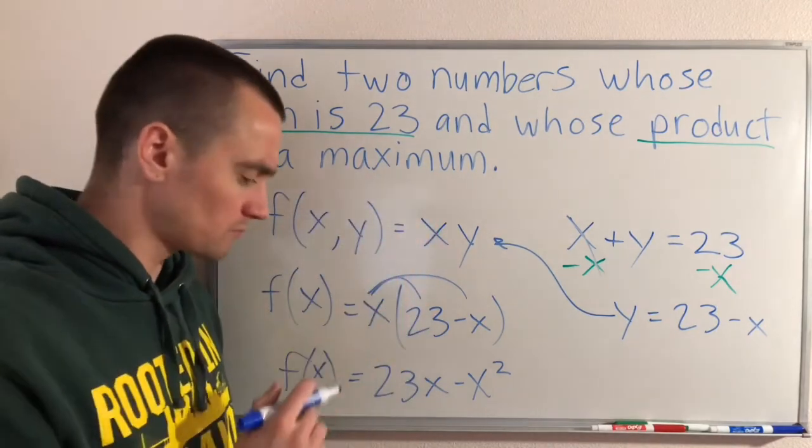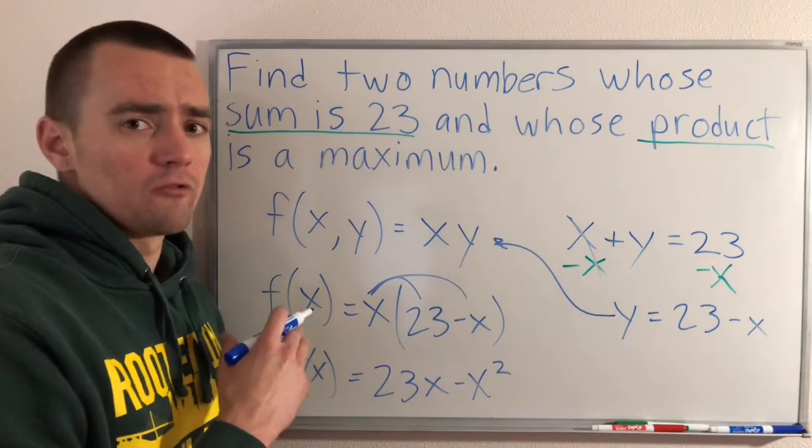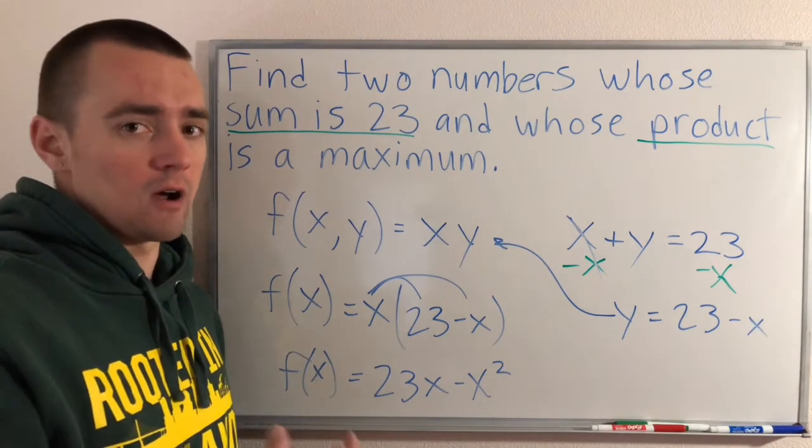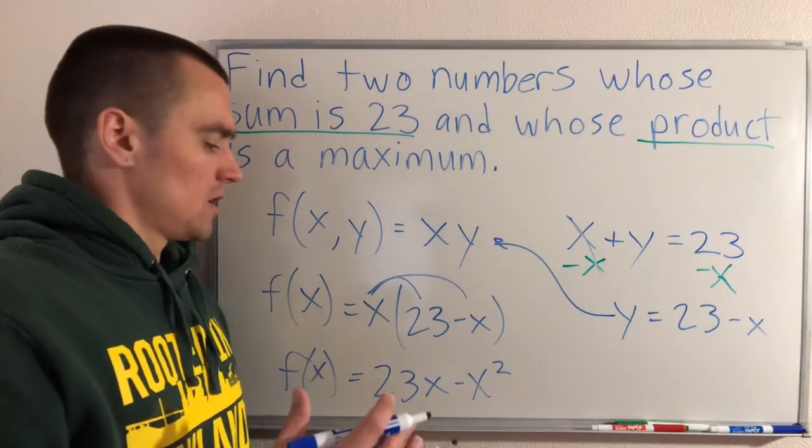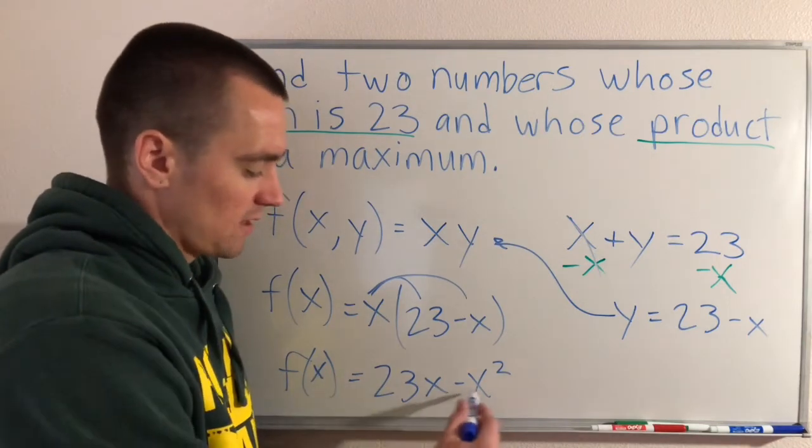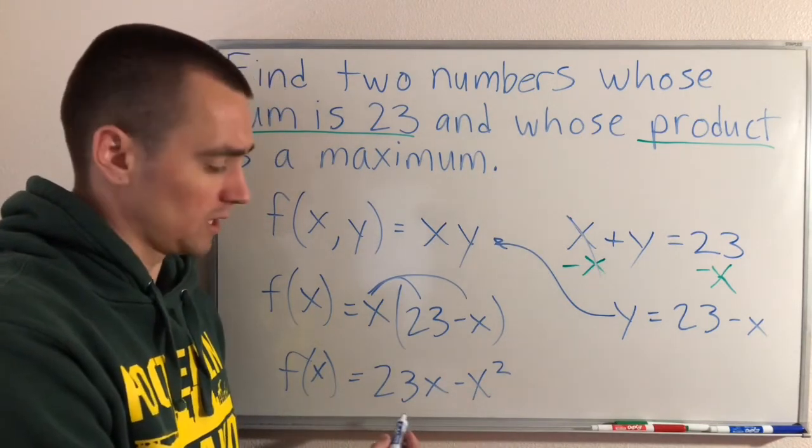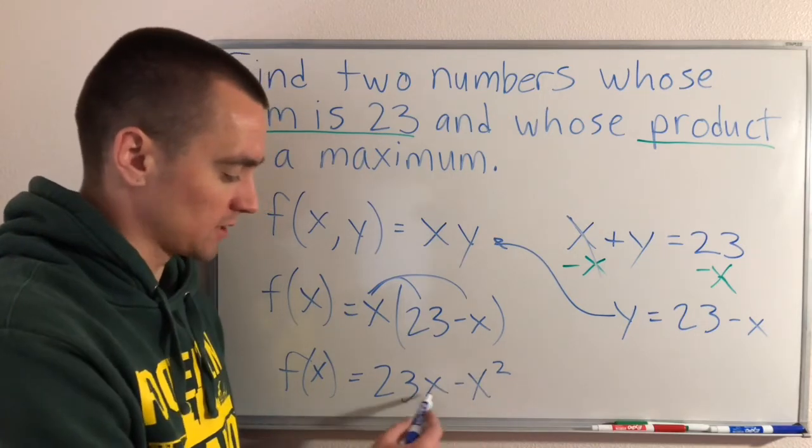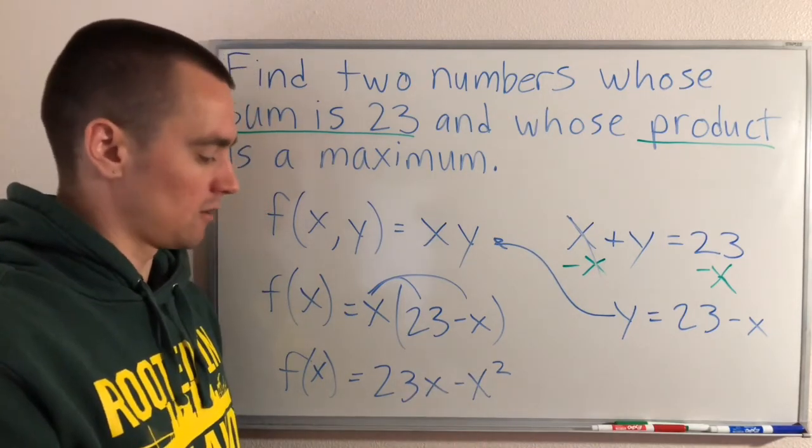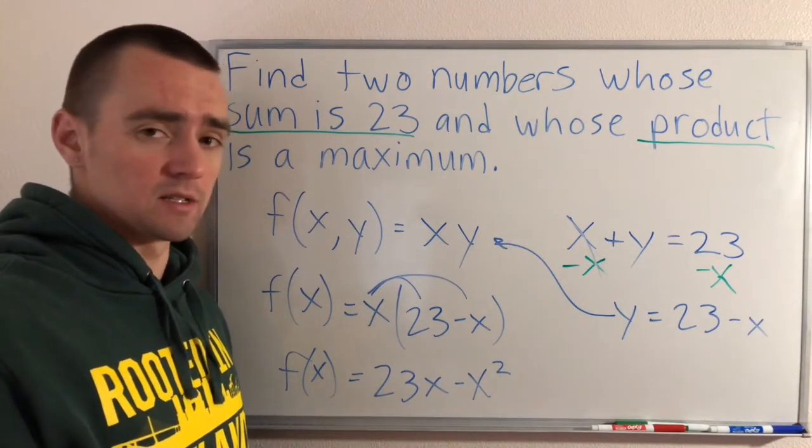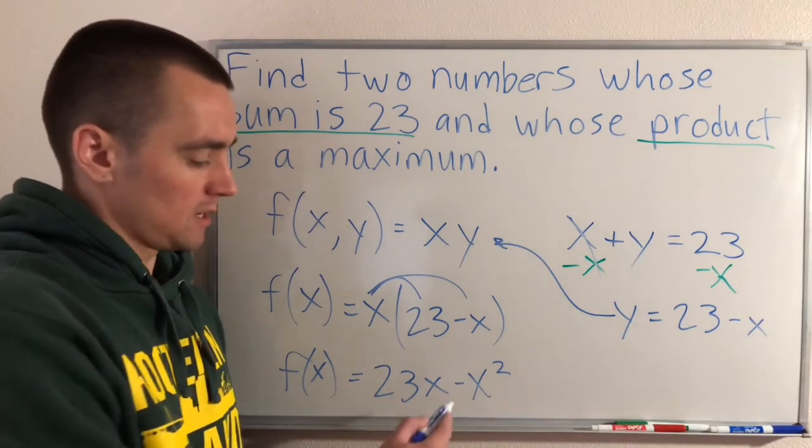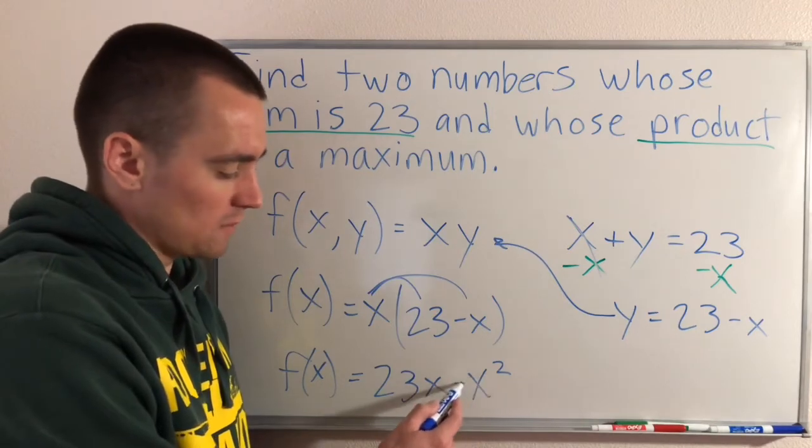However, looking at this function we can see that this would give us a parabola, right? Because we have an X squared term and X term. We don't have a constant here, but having the X squared term and the X term tells us that this is a parabola.